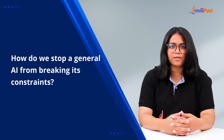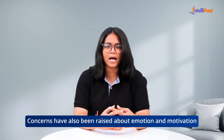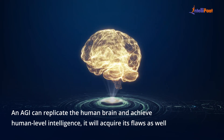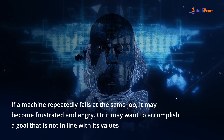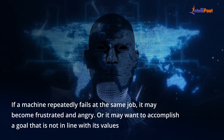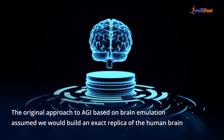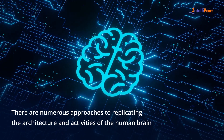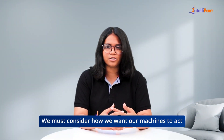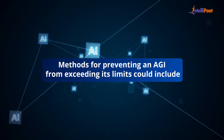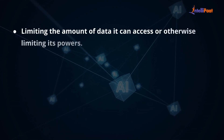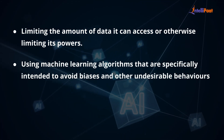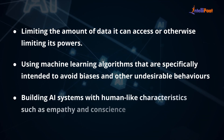Now let's talk about how do we stop general AI from breaking its constraints? Concerns have been raised about emotion and motivation. If an AGI can replicate the human brain and achieve human-level intelligence, it will acquire its flaws as well. For example, if a machine repeatedly fails at the same job, it may become frustrated or angry, or it may want to accomplish a goal that is not in line with its values. The original approach to AGI based on brain emulation assumed we would build an exact replica of the human brain. However, there are numerous approaches to replicating the architecture and activities of the human brain, and we must consider how we want our machines to act. Methods for preventing an AGI from exceeding its limits include: limiting the amount of data it can access or otherwise limiting its powers; using machine learning algorithms specifically intended to avoid biases and other undesirable behaviors; and building AI systems with human-like characteristics such as empathy and conscience.